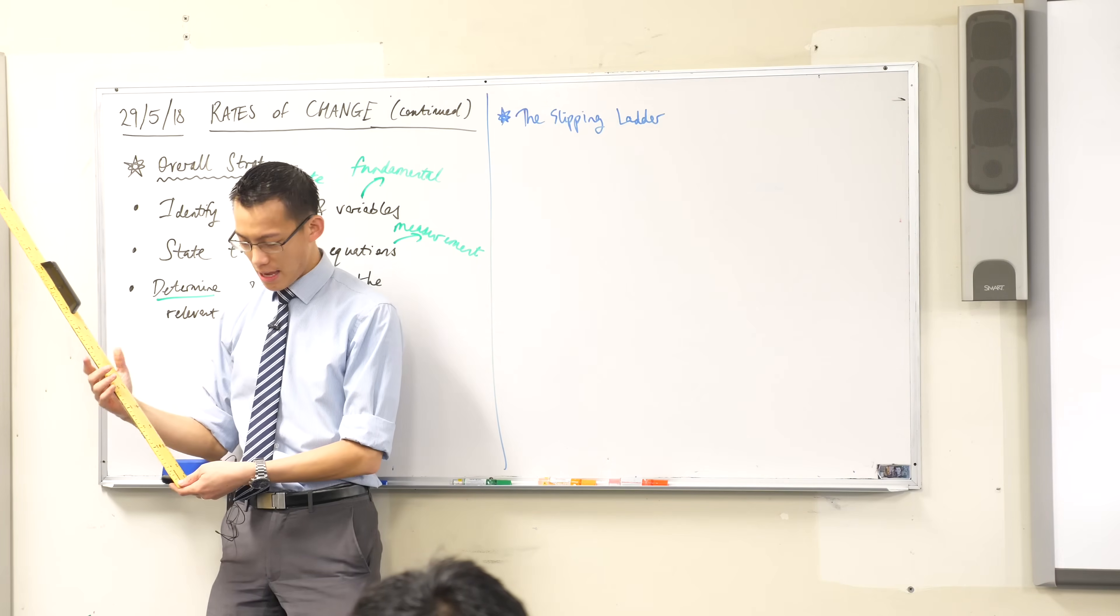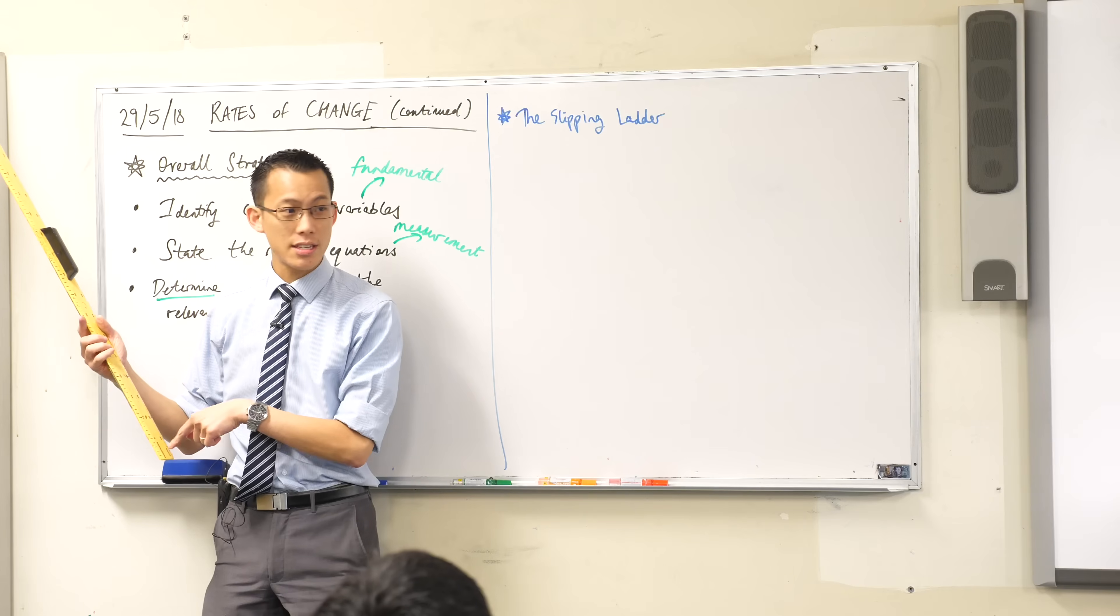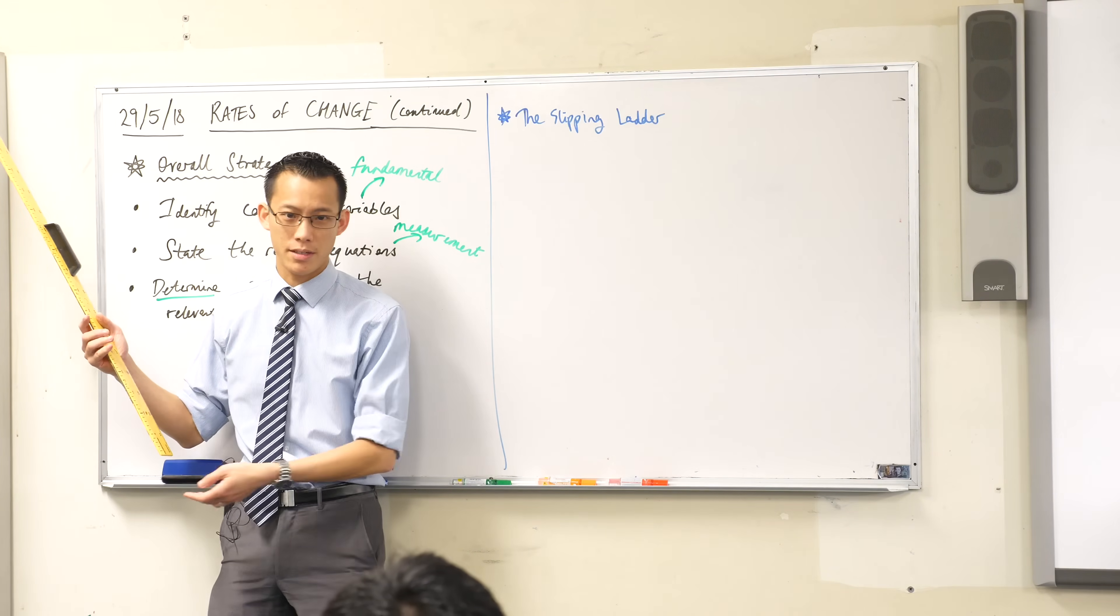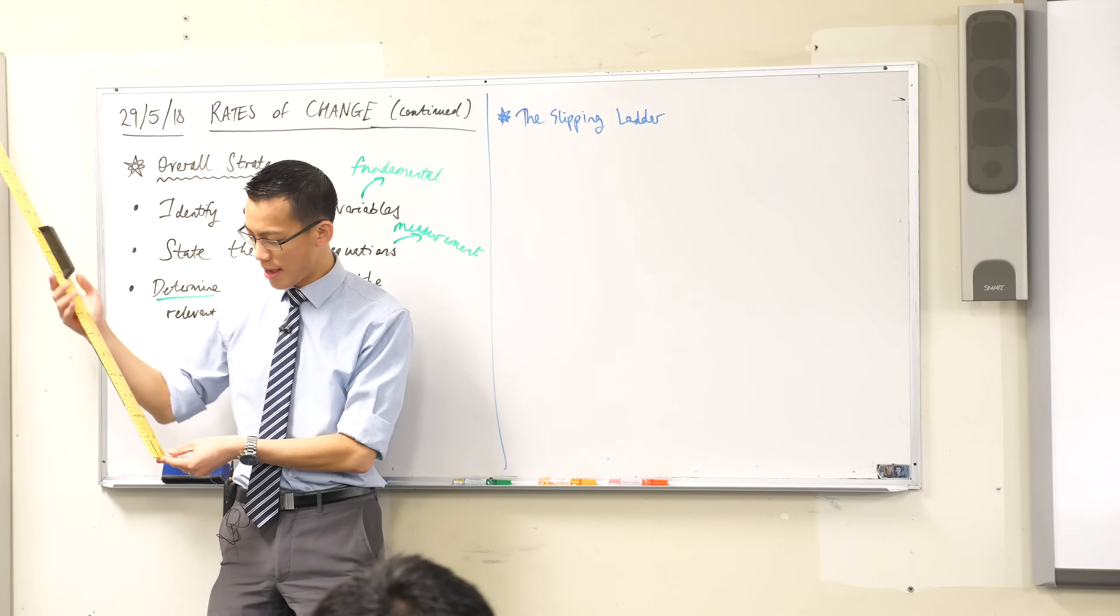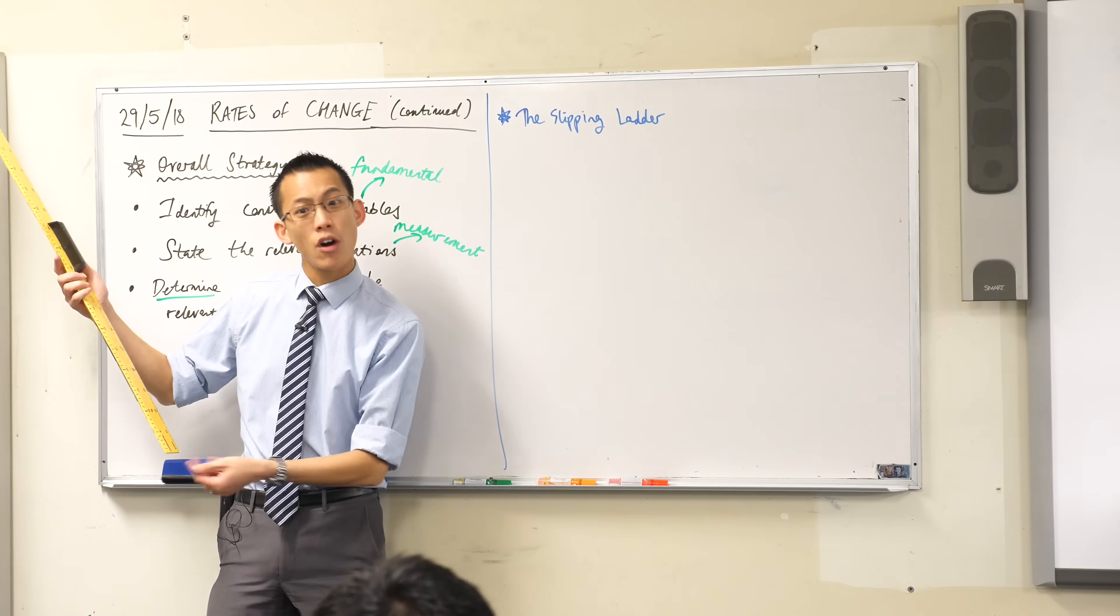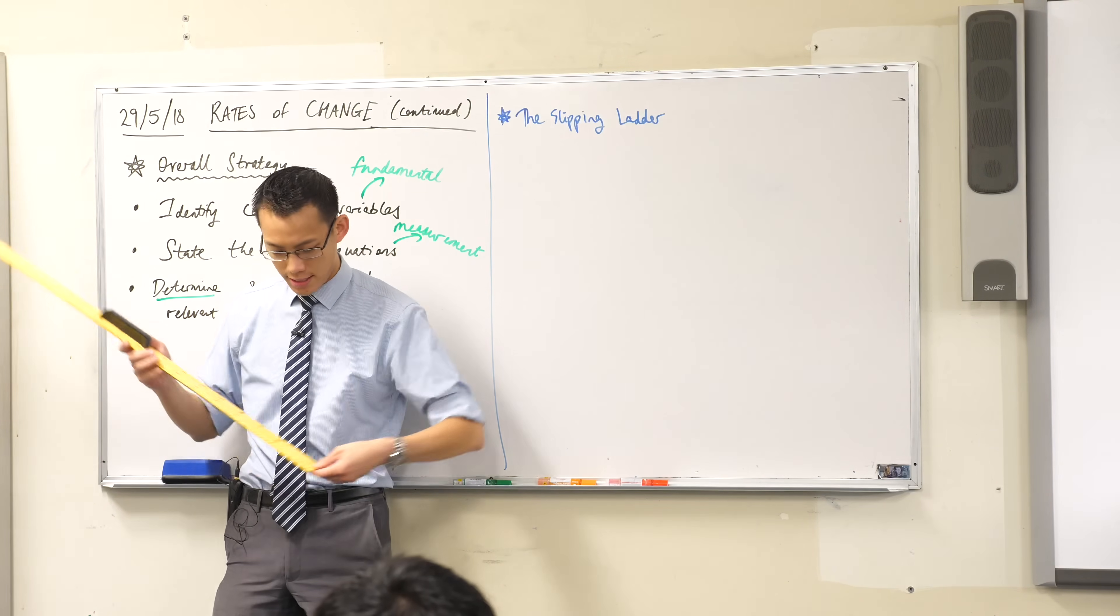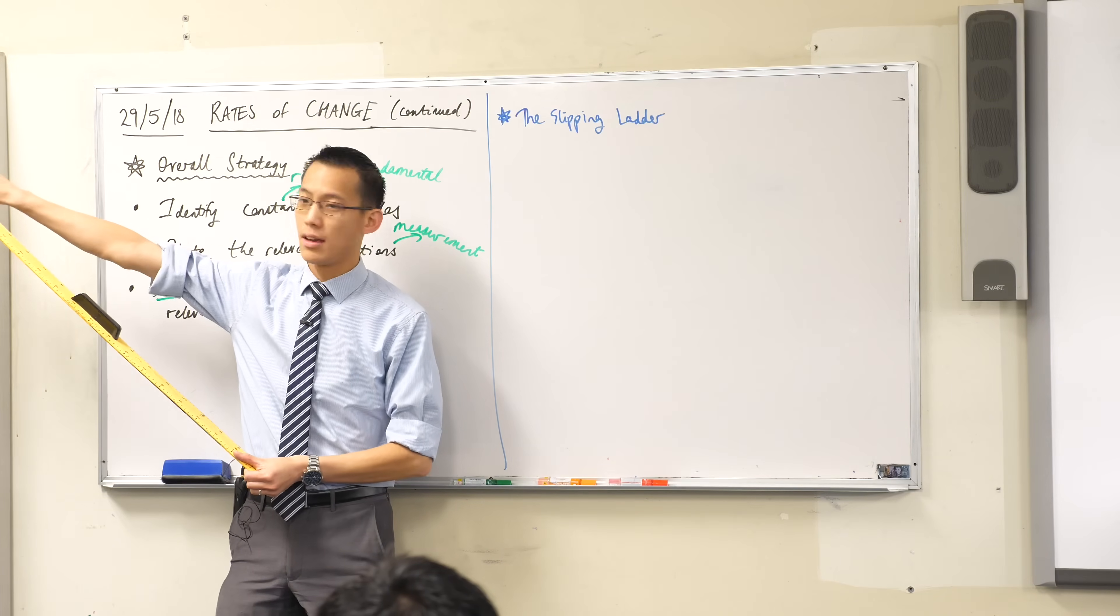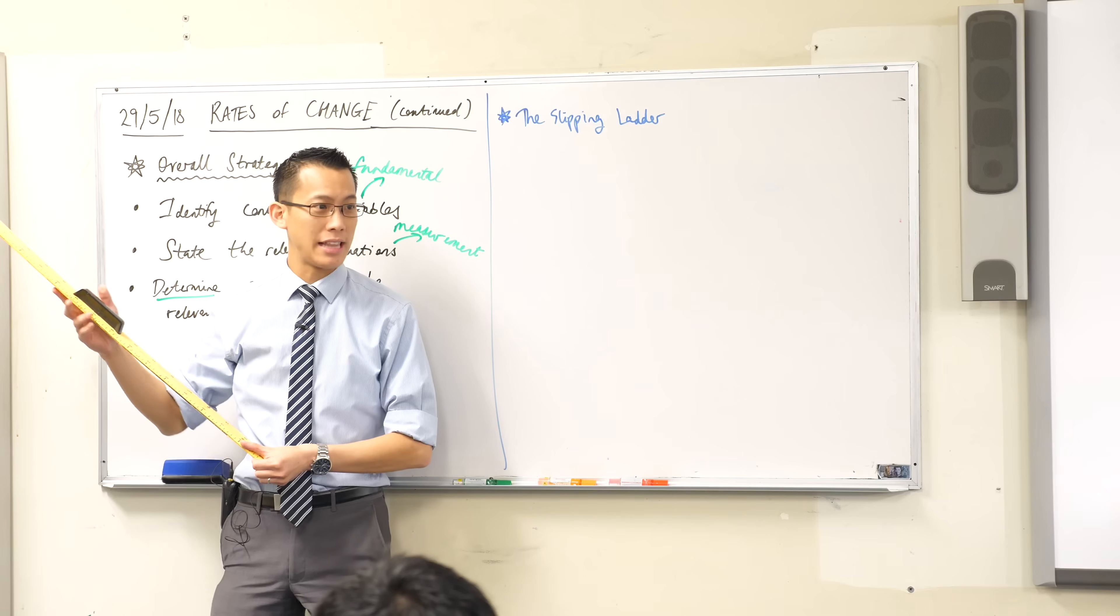Now, the question is, if you know that this end of the ladder on the ground is moving at a certain speed, let's say 4 meters per second, and again, I'll repeat all the numbers for you. If I know it's moving at 4 meters per second this way on the ground, so this is what I'm measuring down here, how fast is the top of the ladder moving?